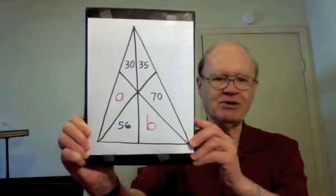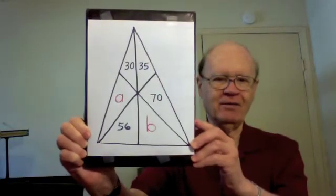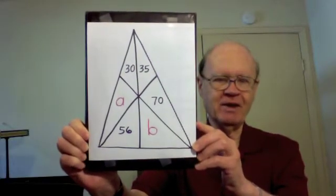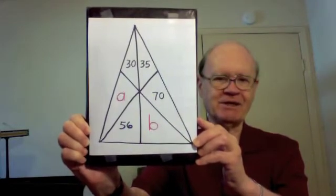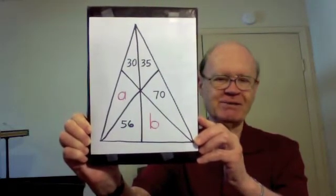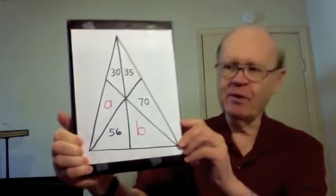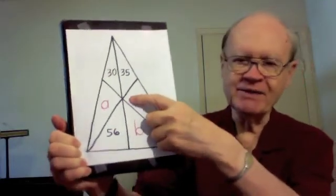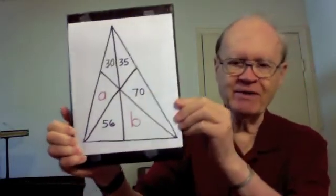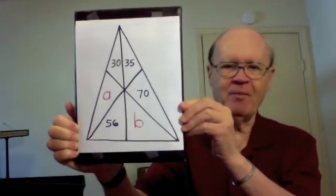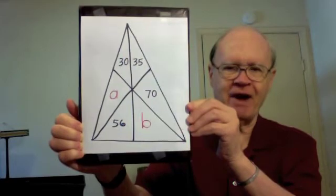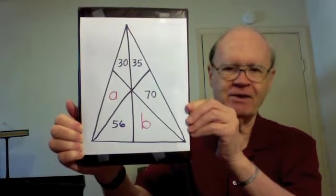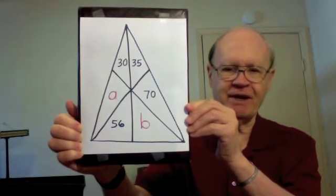You have this large triangle — it is not drawn to scale. Three inner line segments split the large triangle into six smaller triangles, and those three line segments all meet at the same point. The numbers are the areas of inner triangles: 30, 35, 70, and 56.